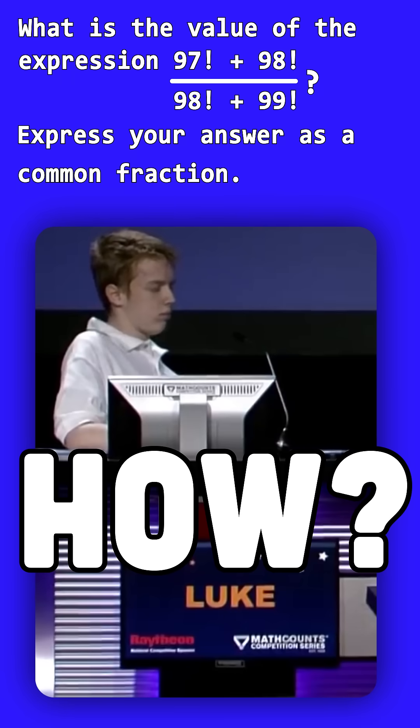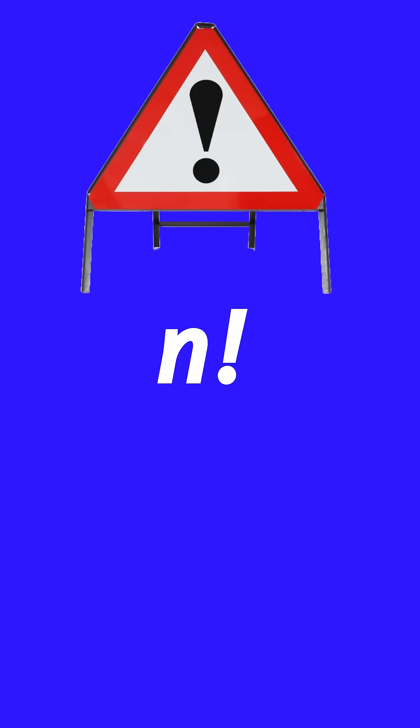How did Luke solve this factorial beast? First, a quick refresh on factorials. n factorial is the product of all positive integers from n to 1. For example, 5! is the product of 5 × 4 × 3 × 2 × 1.